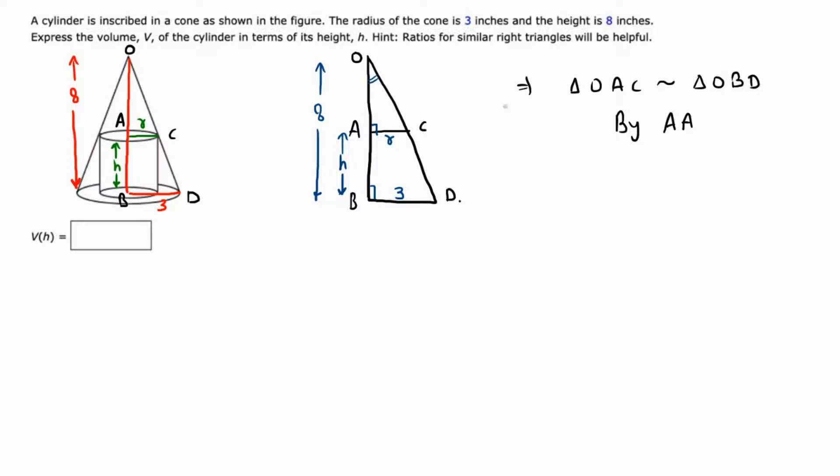So OA over OB equals AC over BD. This means (8 - h)/8 = r/3. From here, we do cross multiplication.